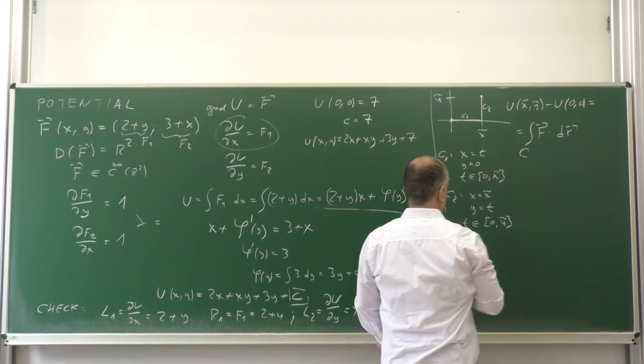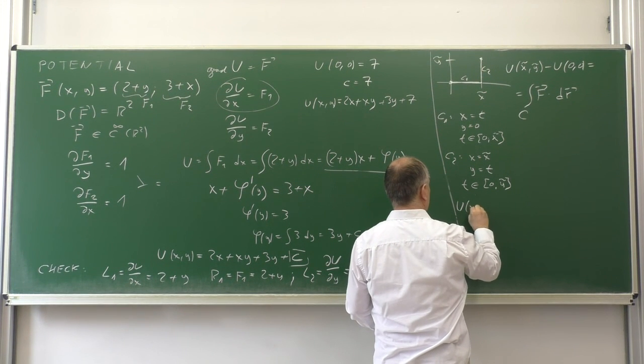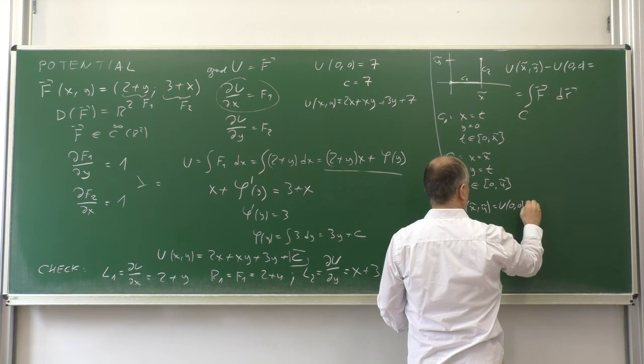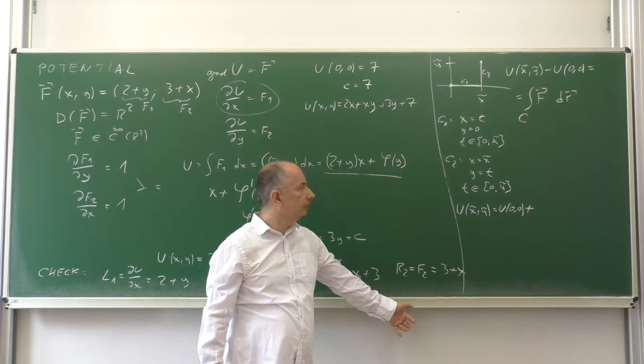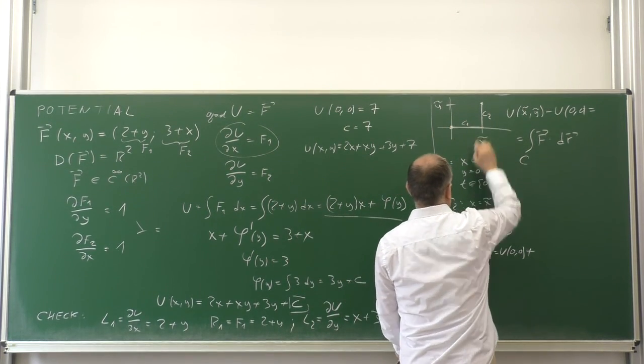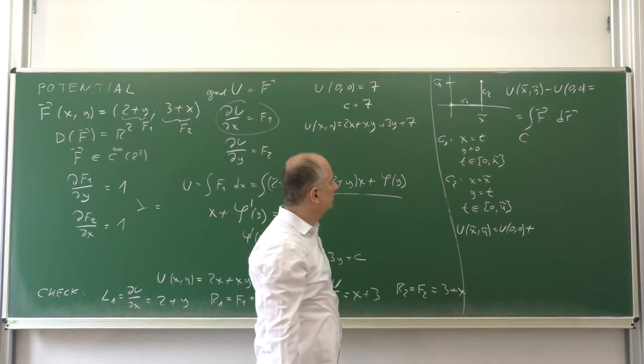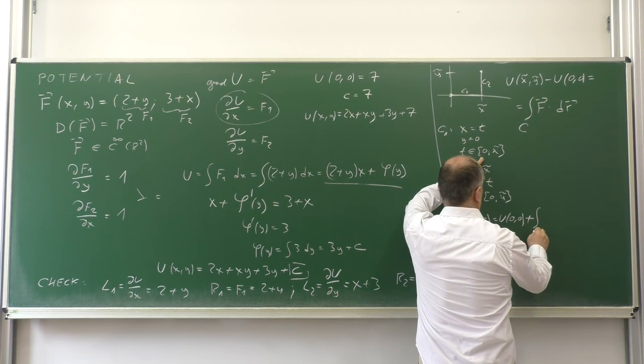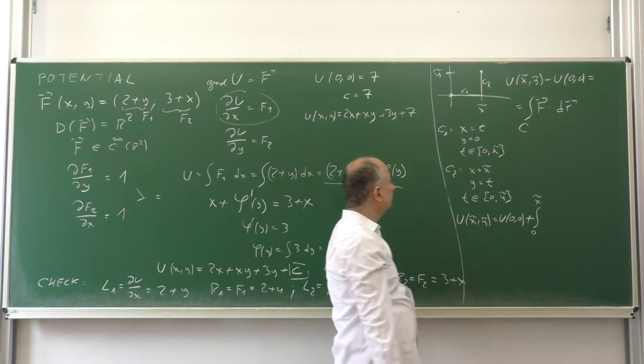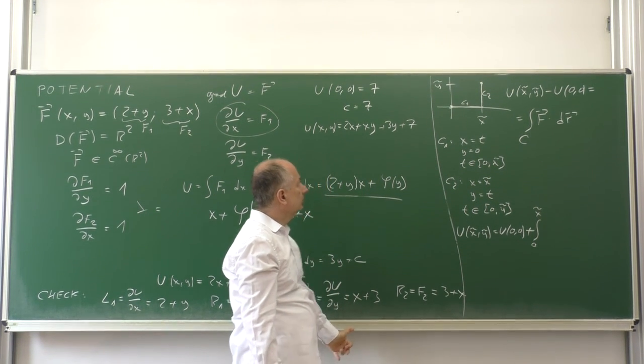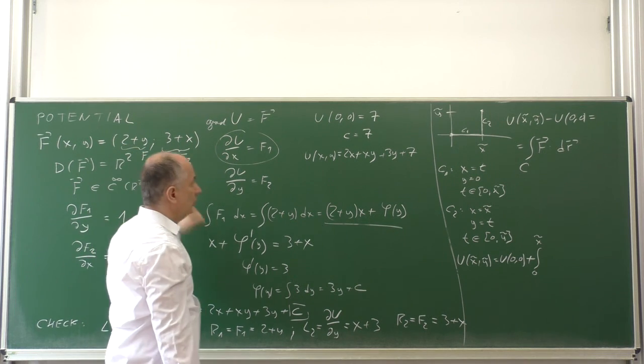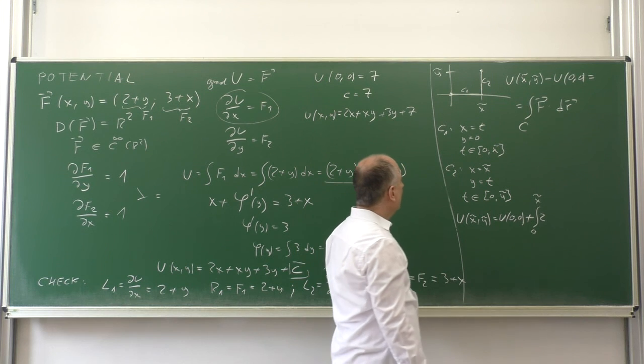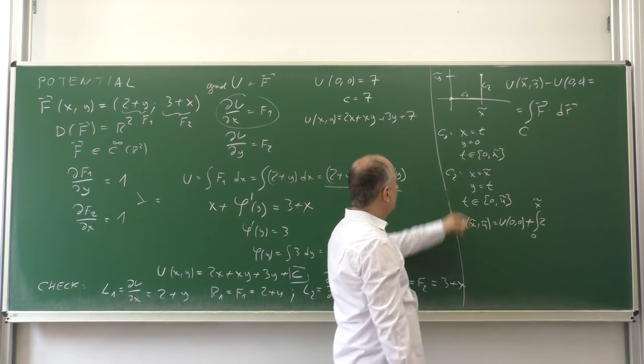Then the potential at the point x tilde is equal to the value of the potential at the starting point plus the line integral. Integrating along C1, we write the limits t goes from 0 to x tilde, F1 is equal to 2 plus y, but y is 0, so 2, times dx which is dt.